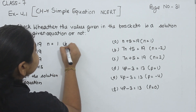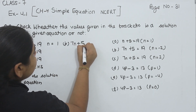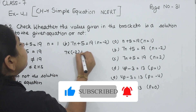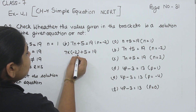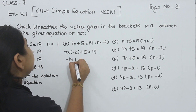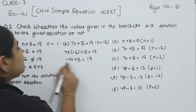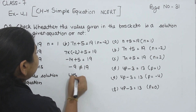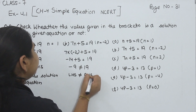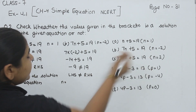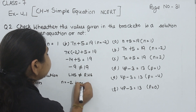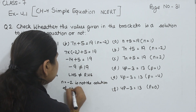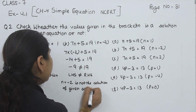Now part B. 7N plus 5 is equal to 19, where N is equal to minus 2. Now 7 multiplied by minus 2 plus 5 is equal to 19. 7 times 2 is 14, so minus 14 plus 5 gives minus 9. This is not equal to 19, so left hand side is not equal to right hand side. N is equal to minus 2 is not the solution of the given equation.